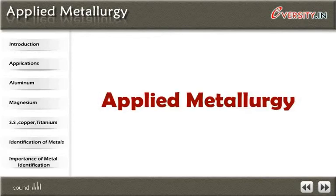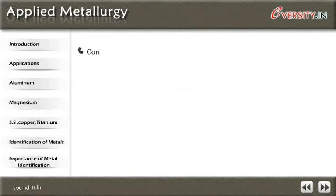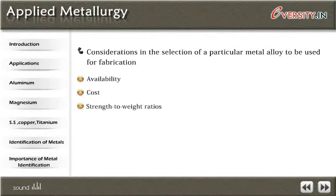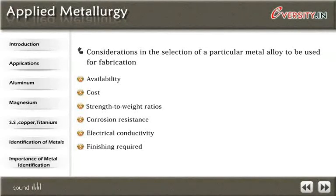Applied Metallurgy. Considerations in the selection of a particular metal alloy to be used for fabrication include: availability, cost, strength-to-weight ratios, corrosion resistance, electrical conductivity, finishing required, and workability.